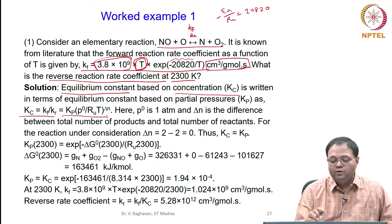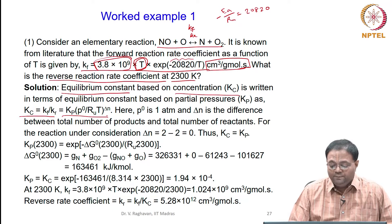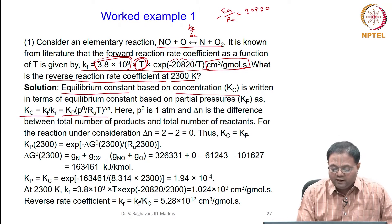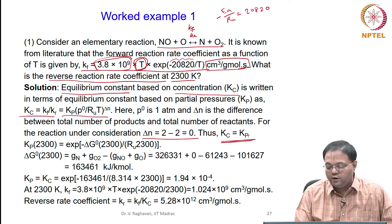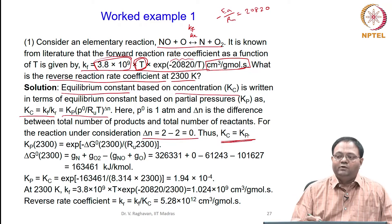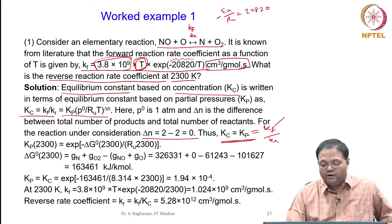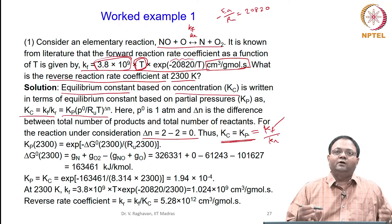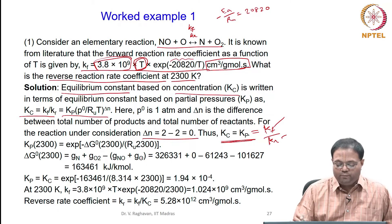For the reaction NO plus O giving N plus O₂, the number of molecules on the reactant side is 2 and on the product side is also 2. So delta-N equals 2 minus 2 equals 0, which means Kc equals Kp. Once Kp is calculated, we know the ratio Kf/Kr. Since Kf is known, Kr can be calculated using the equilibrium approach.